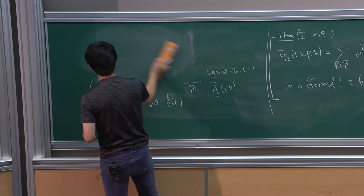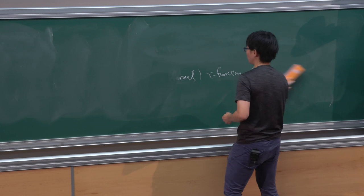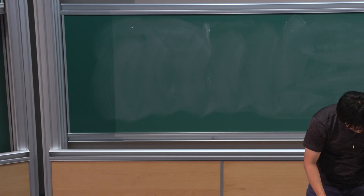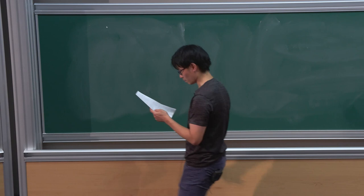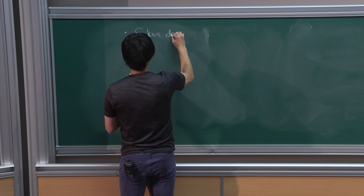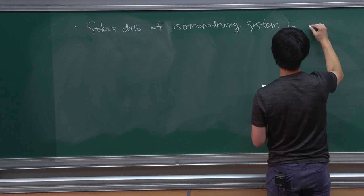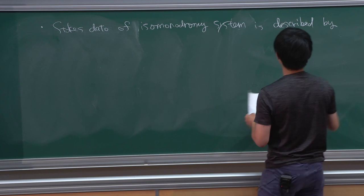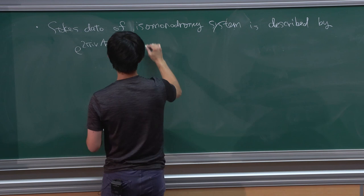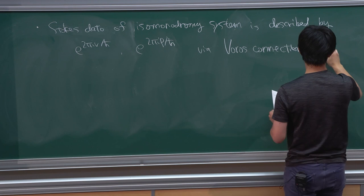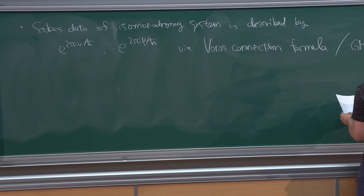In the same paper I also discussed the conjectured expression of the Stokes multipliers — this is the second content of conjecture one. I also expect that the discrete Fourier transform converges under the same assumption, and that the Stokes data of the isomonodromy system is described via the Bohr's connection formula — or Gaiotto-Moore-Neitzke's path-lifting rule.